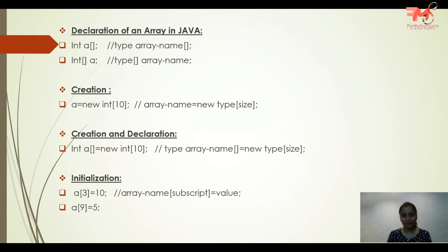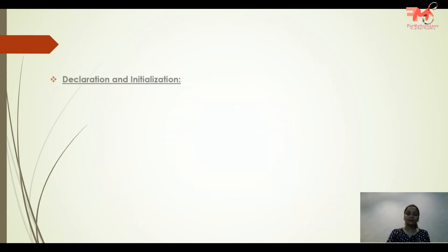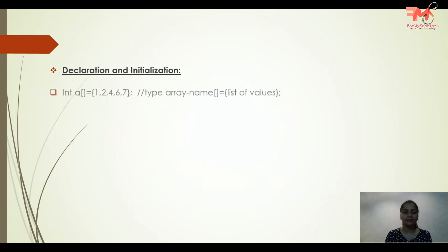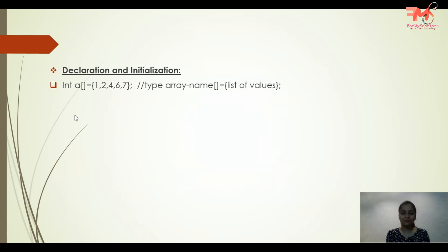Next, if we want to do declaration and initialization both together, then you write the type of the array, then the name of the array, and whatever values you want to place in the array, you can initialize them here. So in this way we can initialize, declare, and create an array in Java.